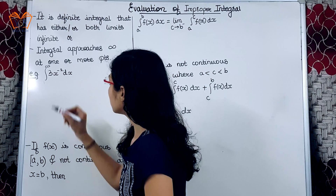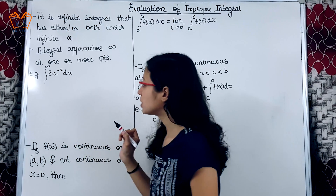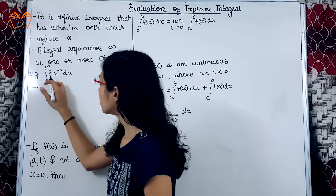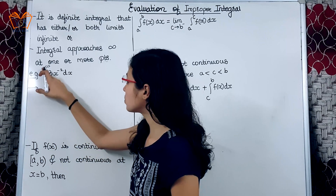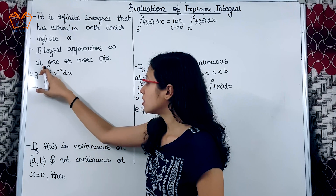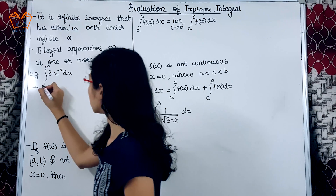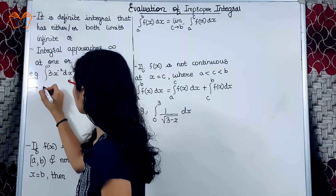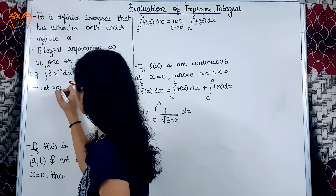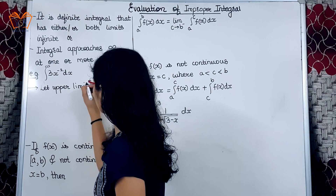Example: integration from 1 to infinity of 3 times x raised to minus 2 dx. In such cases, what we are supposed to do is replace the limit that is equal to infinity by any variable. In this case, the upper limit is equal to infinity, so we will replace the upper limit with y.